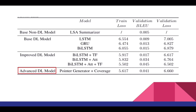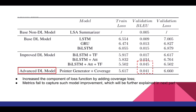Last but not least, surprisingly, at first sight we find out that the model performance after adding the pointer generator and coverage is not as good as before. However, after digging deeper, we think this can be explained by the fact that we added more components to our loss function, and also our metrics failed to capture such improvement, which will be further explained in the next part. Therefore, after the quantitative analysis, we'll give you more examples to help you understand how our model is improved using these techniques.